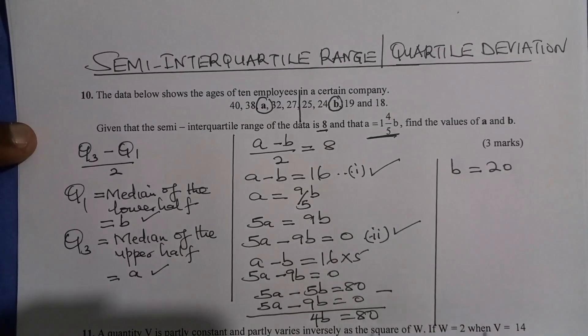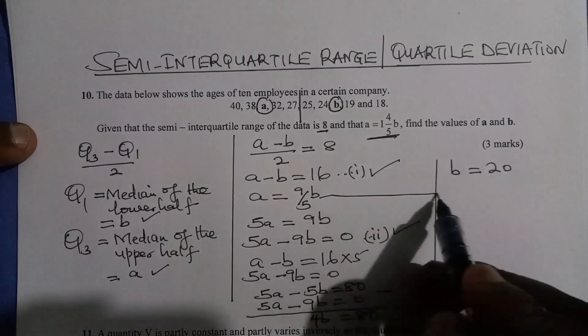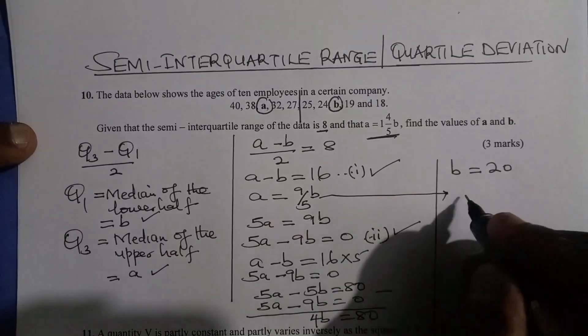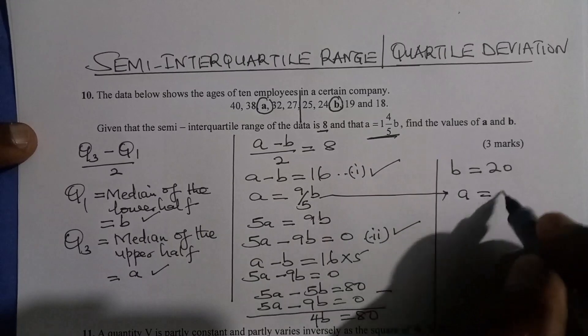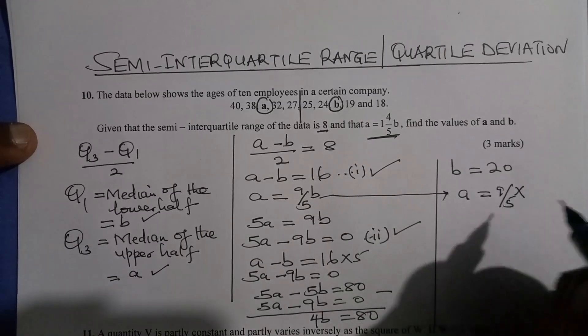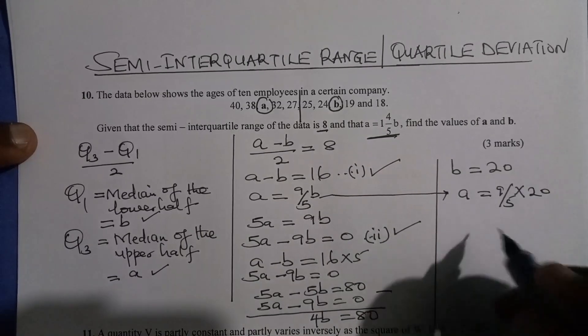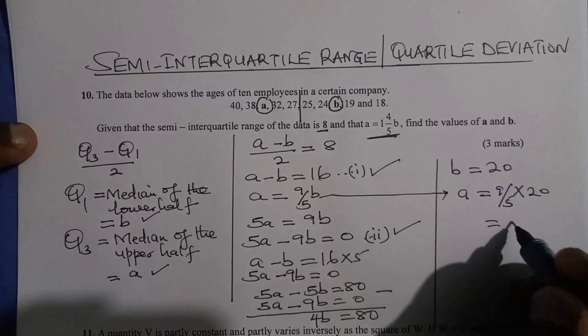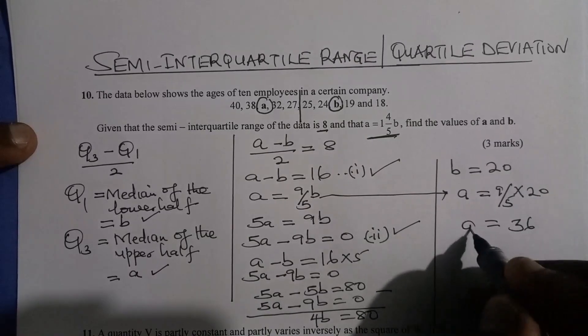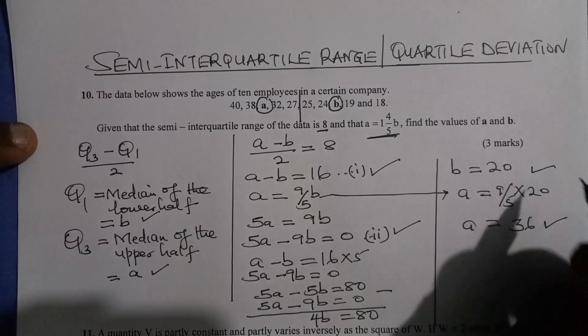After getting B, now we just need to get A. A is 9 over 5B. So A is equals to 9 over 5 times B. And B is 20. And this will give 36. So A is 36 and B is 20. And that is how you're supposed to solve that question.